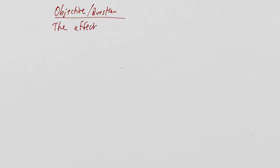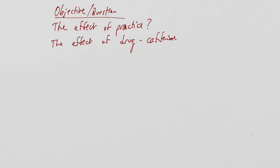There are a couple of different ways they can set this practical up. The first objective is they could ask you to investigate the effect of practice on reaction time — the idea that as you do the practical, do you get better or worse? The second one is: what is the effect of a drug on reaction time? The one they will most likely refer to is caffeine, though it could be sugar or something similar.